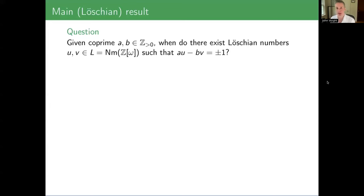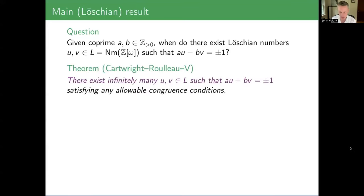Being about more than halfway through my talk, it's a good idea to state a theorem. And our first theorem is, indeed, there are infinitely many such U and V that are norms — that are Loeschian numbers. We can add a little bit more: if U and V are norms from ℤ[ω] modulo M in that way — if you have a solution mod M that looks like it comes from Loeschian numbers — then it does over the integers.